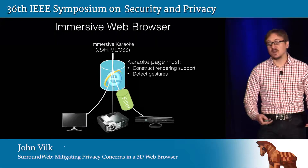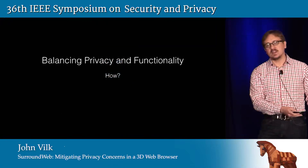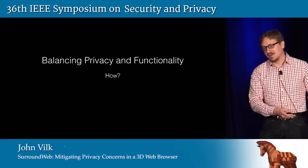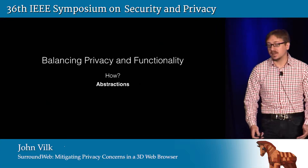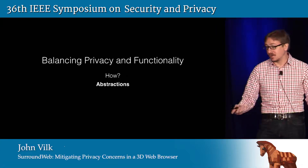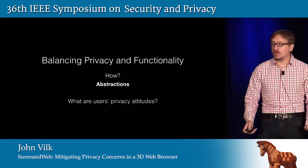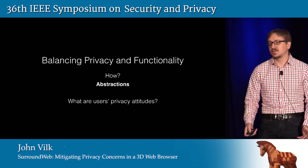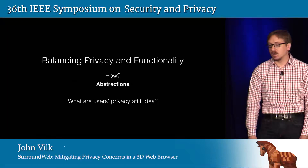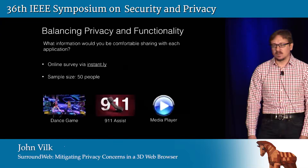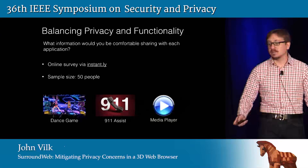So there's a clear tension here between functionality and privacy. How can we give immersive web pages the ability to detect gestures and render content intelligently while maintaining some notion of user privacy? Our answer was a set of new abstractions, which we implemented in a 3D web browser called SurroundWeb. But before we designed those, we had to answer a related question: what are users' privacy attitudes anyway in this type of environment? Going into this work, we didn't know, so we turned to user surveys. We deployed an online survey using the Instantly service to 50 people, and we wanted to understand their privacy attitudes in a variety of scenarios.